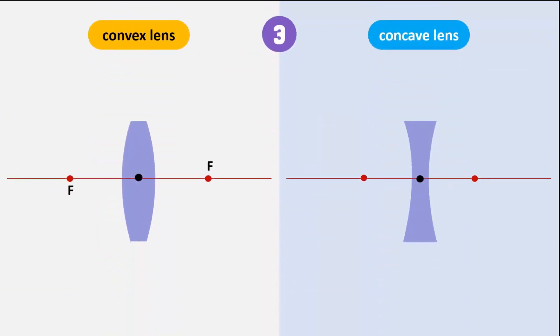Let's look at a ray of light that passes through the principal focus. After going through the lens, it refracts and becomes parallel to the principal axis.